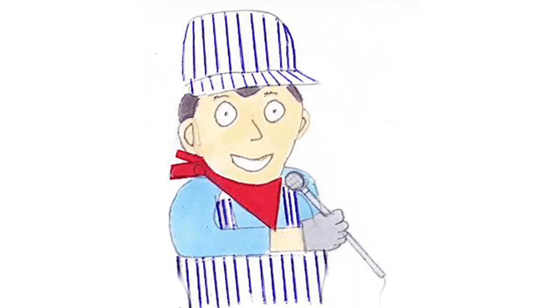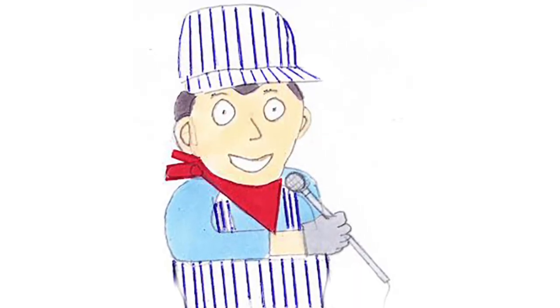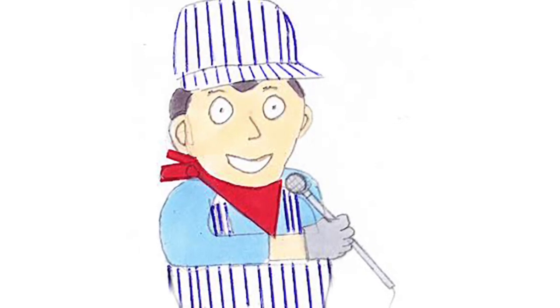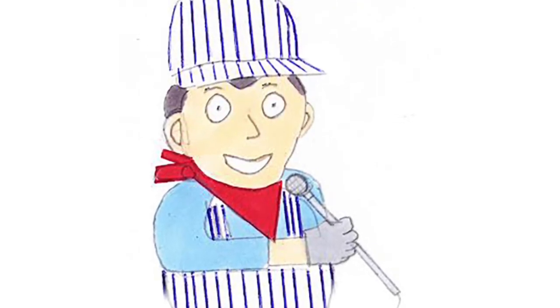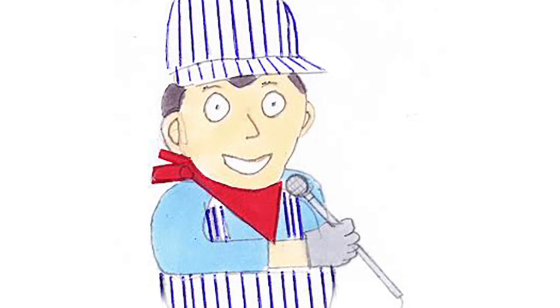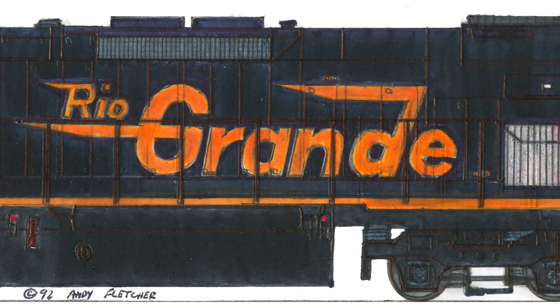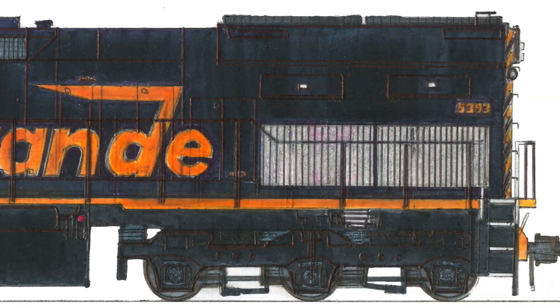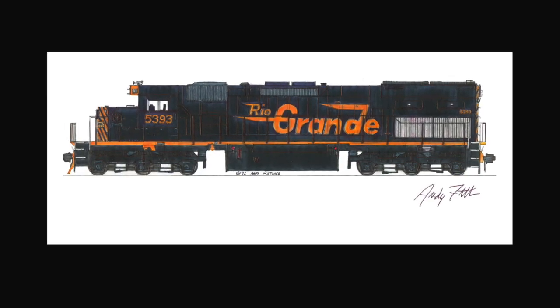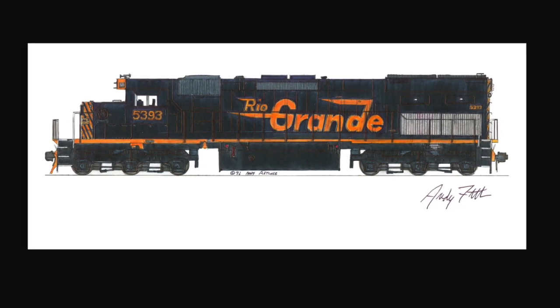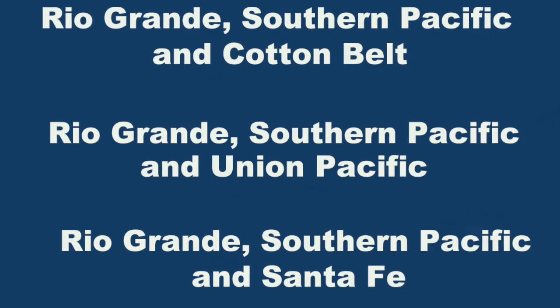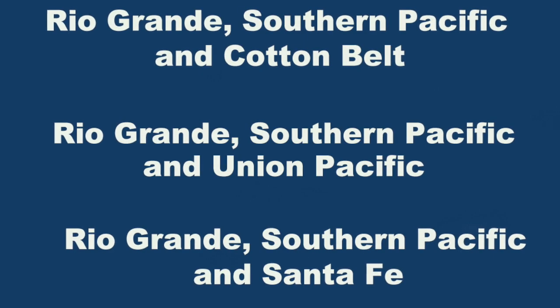Wait! It appears we have a diesel locomotive bonus question. This diesel locomotive bonus question is worth 10 points. What railroads originally owned tunnel motor locomotives? A. Rio Grande, Southern Pacific and Cotton Belt.